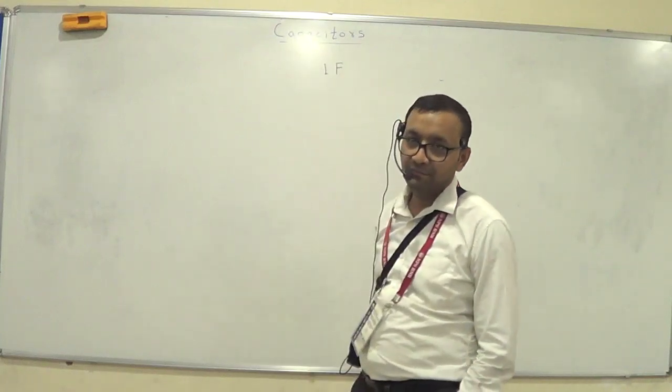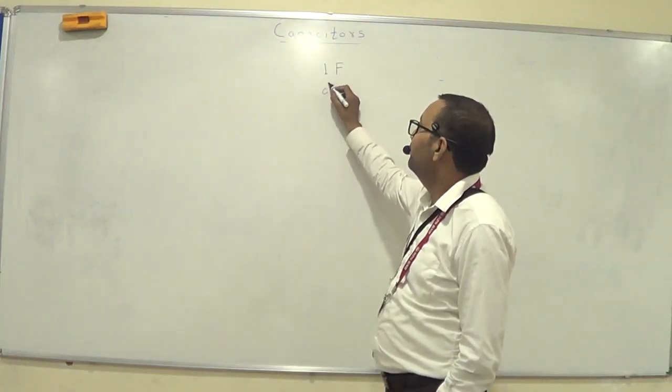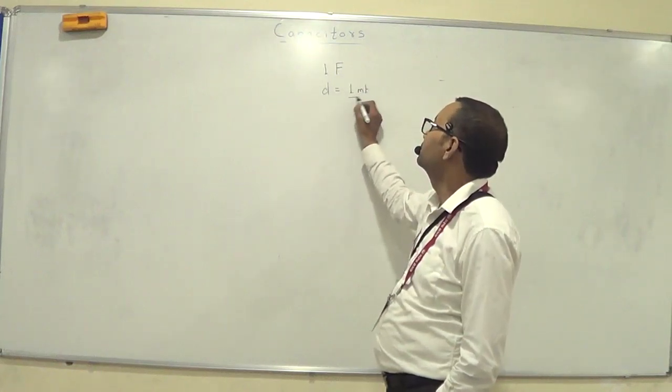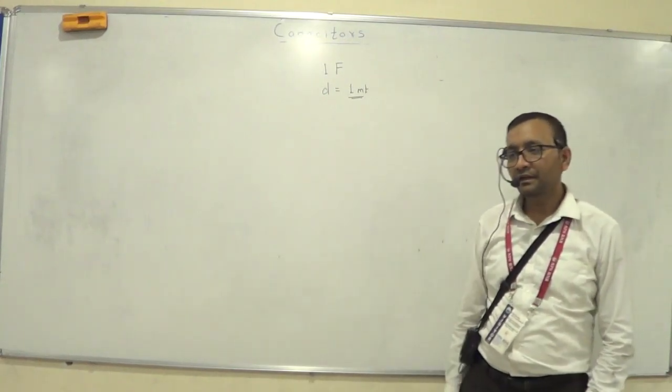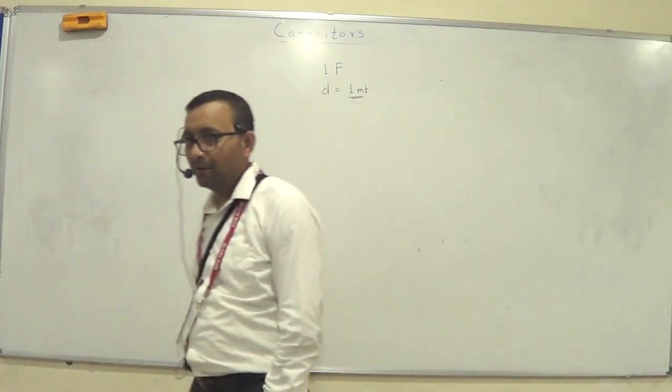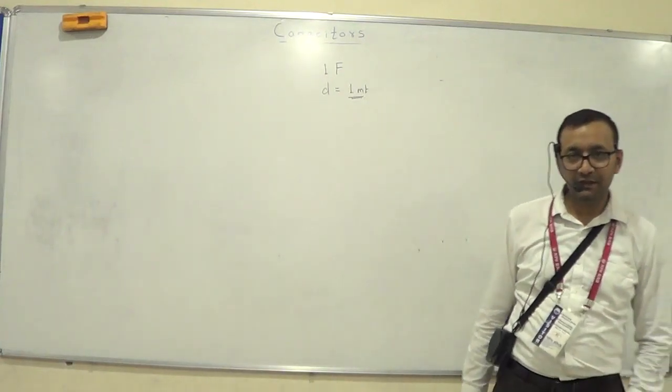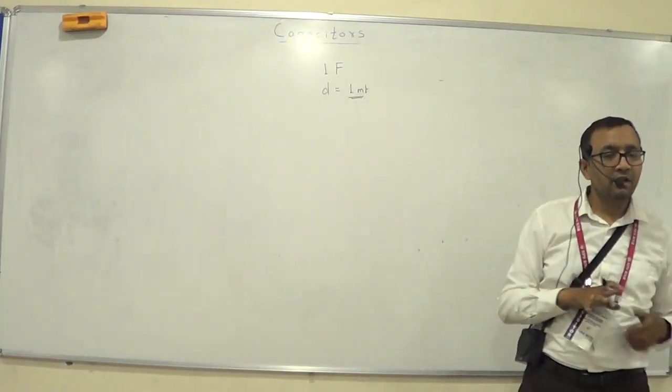The distance between the plate is given as 1 meter. 1 meter is a big distance, but still. Find out the area of the plate which has 1F capacitance. Distance between the plate is 1 meter.